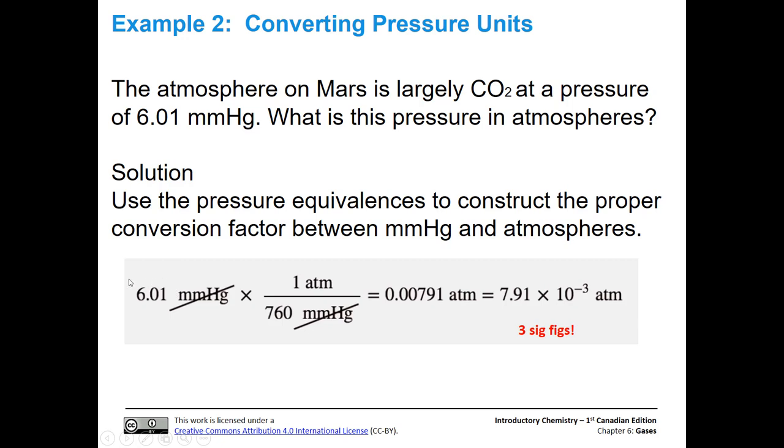Now again, only the initial pressure is what we use to count sig figs, and there are three. So let's go to our answer, and we can see there's one, two, three, and all of these leading zeros do not count in counting sig figs. You can see it more clearly in the scientific notation: 7.91 times 10^-3 atmospheres. Remember, if you want to make it more clear how many sig figs you're using, you could always convert your answer into scientific notation.